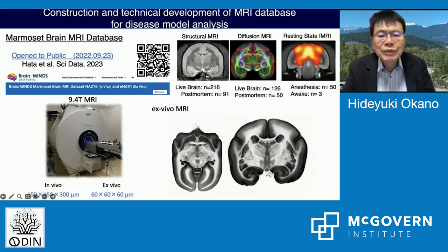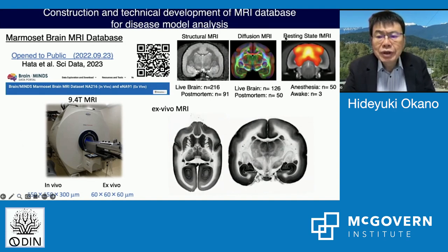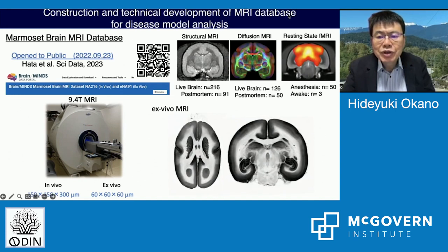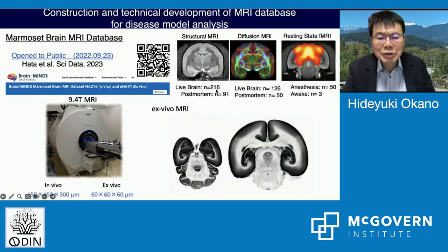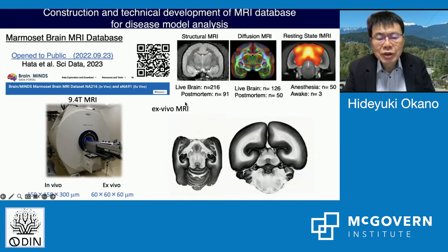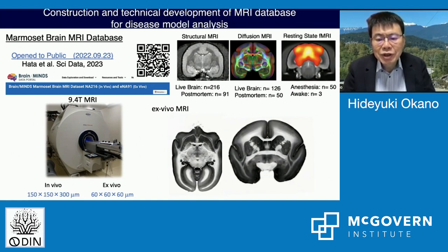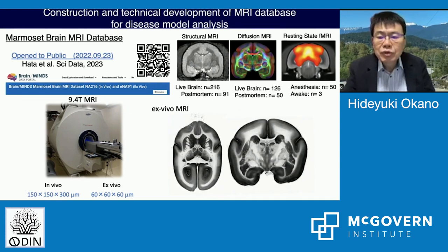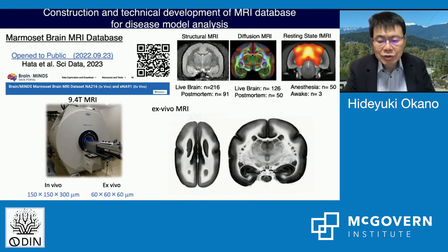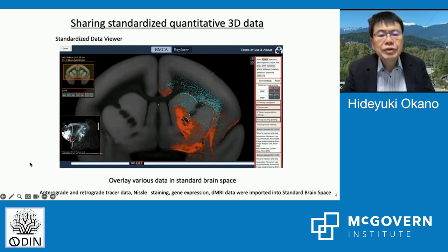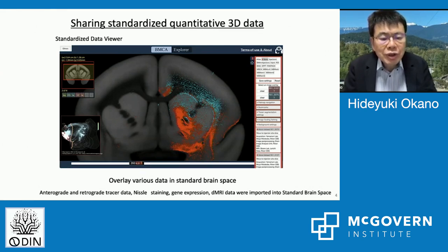We have a huge amount of data of structural MRI, diffusion MRI, and resting-state MRI using a 9.4 Tesla scanner, for both live brain and post-mortem brain. This is an example of the ex vivo MRI and you can see very fine morphology of the marmoset brain. We have also developed a standard brain space and shared standard quantitative 3D data, overlaying various data in this space — including anterograde and retrograde tracer data, Nissl staining data, and spatial gene expression data.